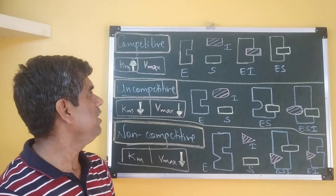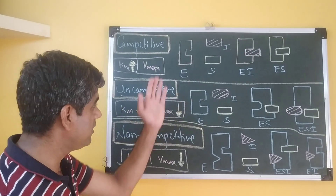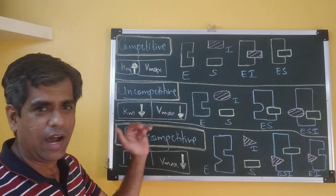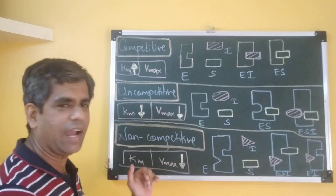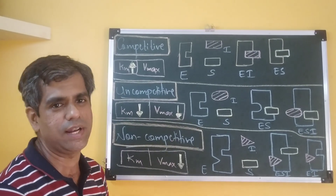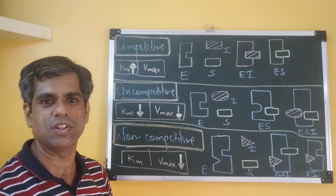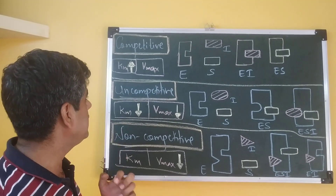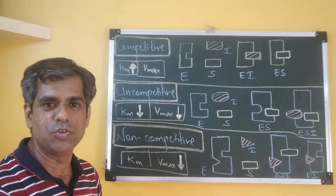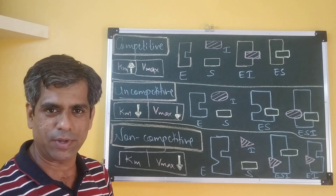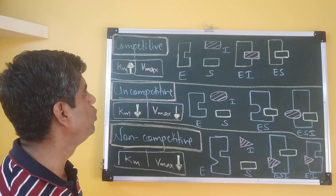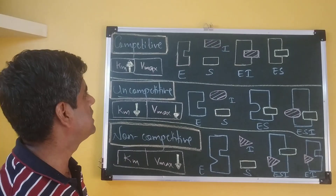Hi friends, today we will be summarizing the effects of competitive, uncompetitive, and non-competitive — the three types of reversible inhibitors — on enzymes. We know that they have different effects on the values of Km and Vmax of a typical enzyme. Let us just have a summary of what they do in their presence.